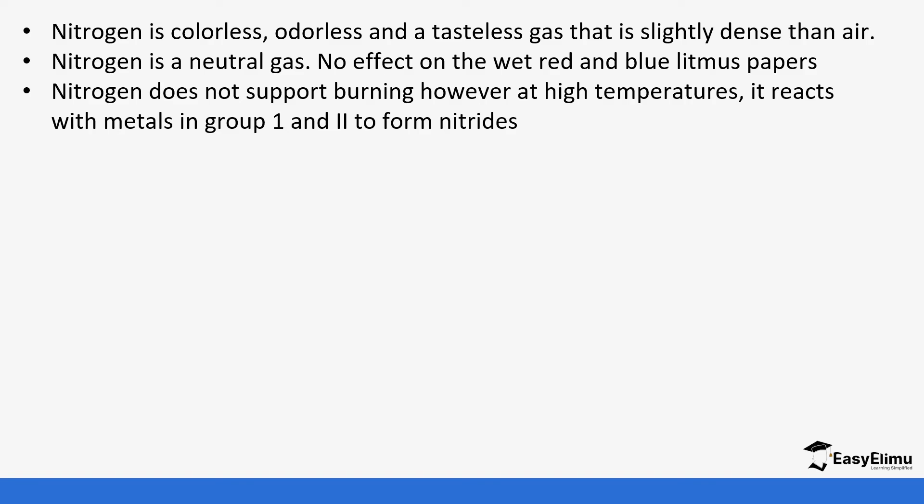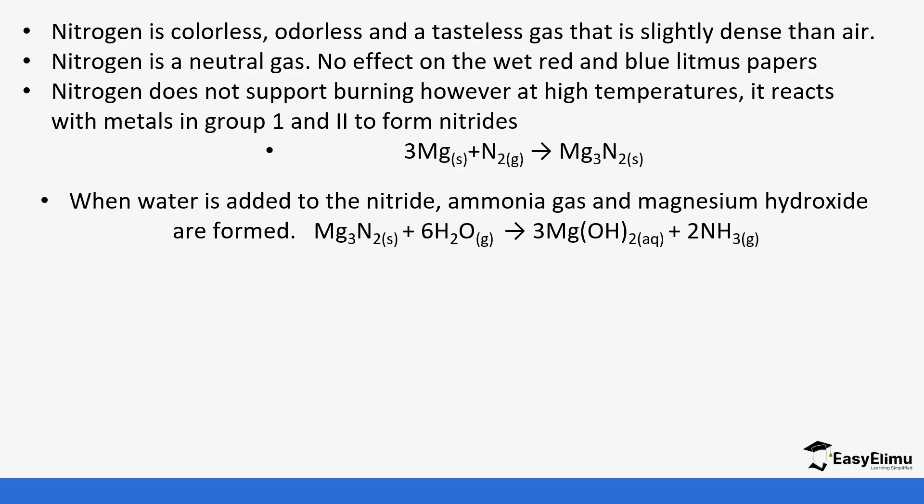It does not support burning, however at high temperatures it can react with metals of group 1 and group 2 to form nitrides. An example is magnesium. When magnesium reacts with nitrogen, it forms magnesium nitride, Mg3N2. The reason why this is possible is because there's a lot of heat that is produced that breaks the triple bond. We know that nitrogen has a very strong triple bond that causes it to be unreactive, but for group 1 and group 2 metals they produce a lot of heat during the reaction, which makes it possible for them to react with nitrogen.